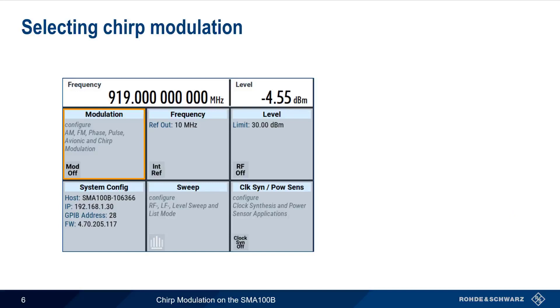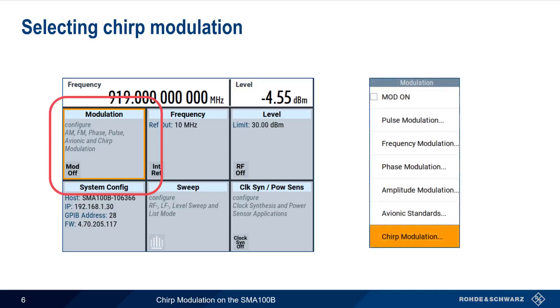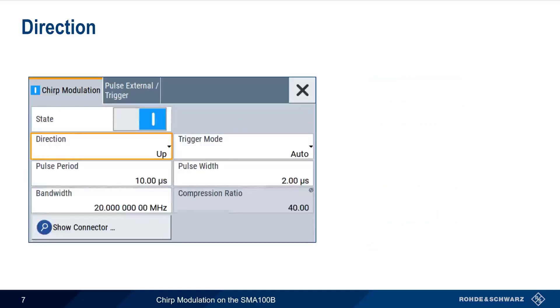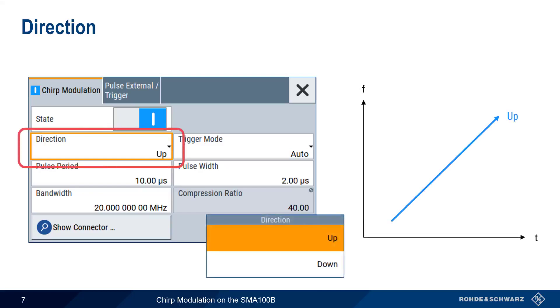To configure chirp modulation on the SMA-100B, we first press on the Modulation tile and then select Chirp Modulation from the list of available modulation types. The first decision that needs to be made is the direction of the chirp. Up means the frequency of the carrier starts low and then moves higher, whereas down means the carrier starts high and moves lower in frequency. Because chirp is linear FM, the frequency change is always in the form of a straight line.